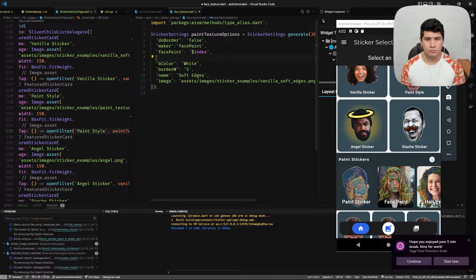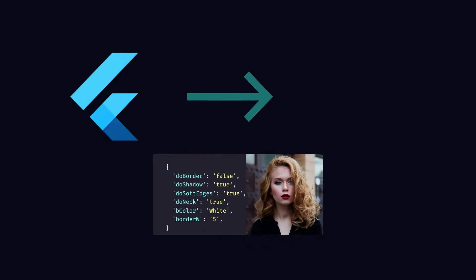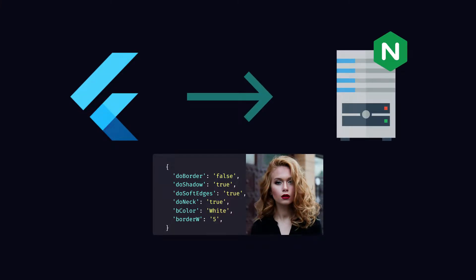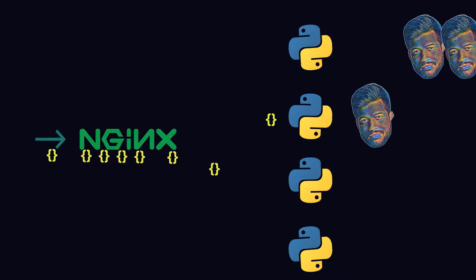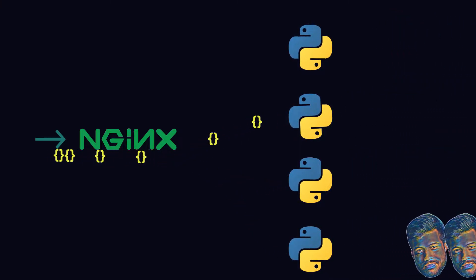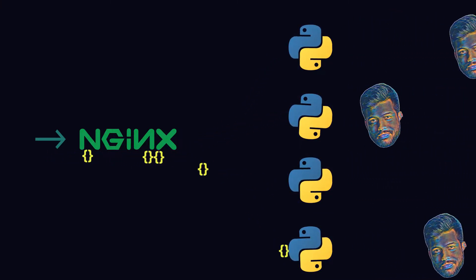Let's do an overview of how the different stickers work and what I've been using to create them. First, a quick pass over the architecture of the client-server setup. Flutter sends a request with the configuration of a sticker and an attached image. On the server I have an nginx server running as a reverse proxy, which works as a load balancer into 4 different running Python servers that handle each request.